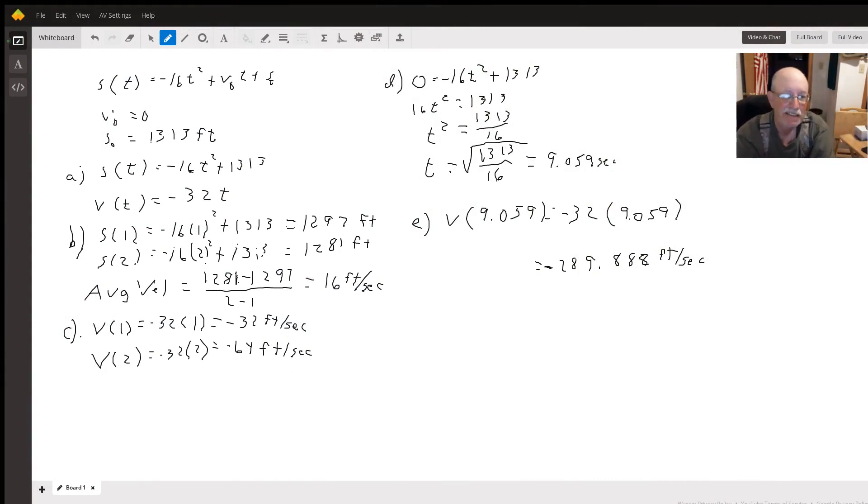Hello. We've got your basic throw the ball in the air problem. In this case, we're just dropping it from this height, so we're going to use s(t) = -16t² + v₀t + s₀.